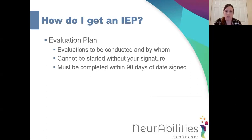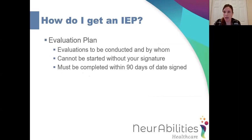At the identification meeting, they will write what's called an evaluation plan. If an evaluation is warranted, this plan will include the evaluations that will be conducted and who will complete them. The evaluations cannot be done until you sign this document — without your signature, nothing can start. Once they have your signature, the team has 90 days to complete all of their evaluations and then hold an eligibility meeting. You should receive all of these evaluations at least 10 days prior to the eligibility meeting to give you time to review them and prepare any questions.